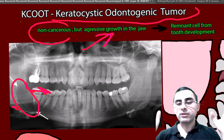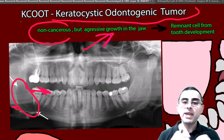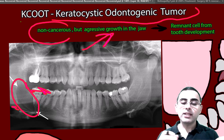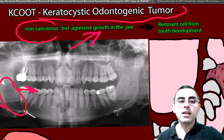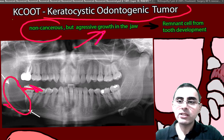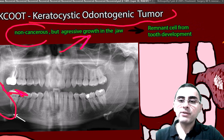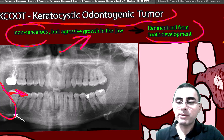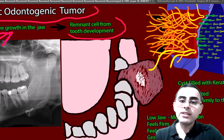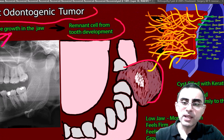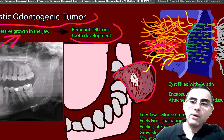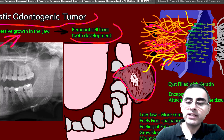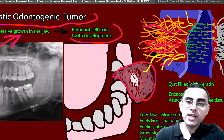Over time it grows — usually the growth pace is slow, but it can grow large enough to cause important problems. Keratocystic odontogenic tumor arises from remnant cells from tooth development, and it's actually a cyst filled with keratin. Keratin is the protein our hair and fingernails are composed of.